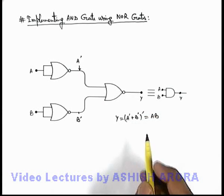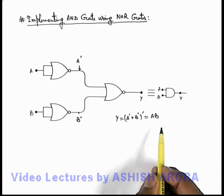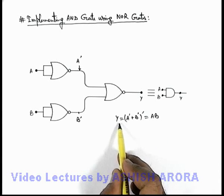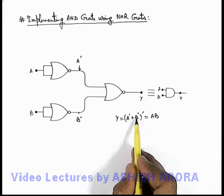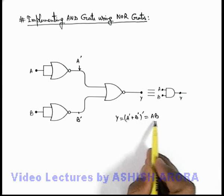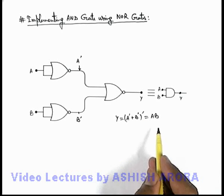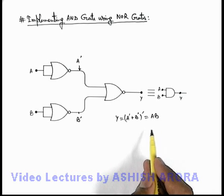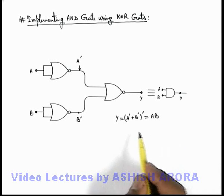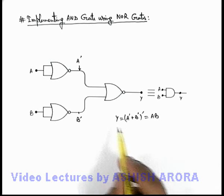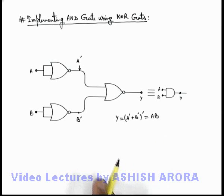In Boolean algebra, there are ways to mathematically prove that the Boolean expression for A prime plus B prime whole prime will be equal to AB, but as this is out of scope of these lectures, we're not discussing it right now. In the advanced section of digital electronics of Physics Galaxy, I'll be taking the proof of this also.